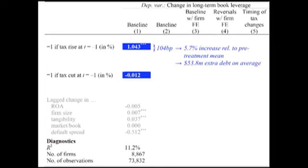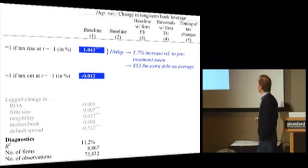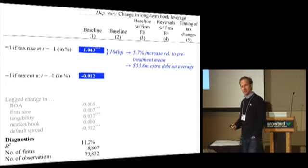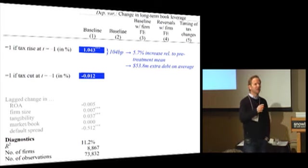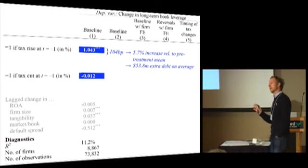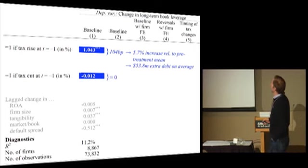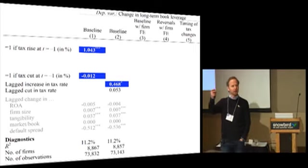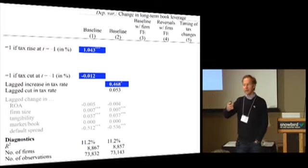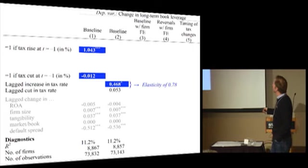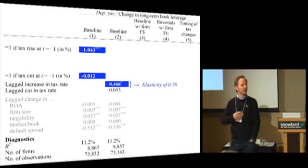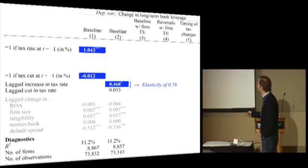This translates into a 5% increase relative to the pretreatment amount of leverage, which is of the order of 20%. In terms of backing out the amount of debt, it's about 53 million of extra debt, relative to a pretreatment amount of debt of around 500 million. So this is a sizable effect. We then code the change of these tax rates as a continuous variable and get a coefficient that translates into an elasticity of about 0.8 — so for a 1% increase in the tax rate, you get a change in leverage of 0.7%. Nothing for the tax cuts.